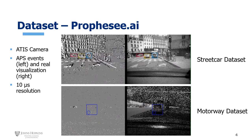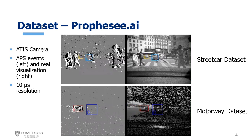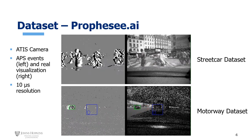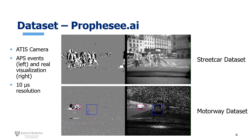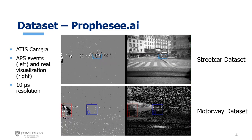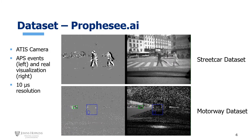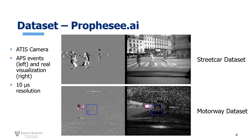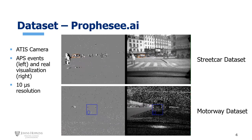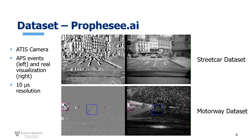The second dataset is labeled as Motorway. Same way the information was captured — an ATIS camera mounted on top of a car driving on a freeway. We liked this dataset a lot because it was way more homogenous. There were cars moving in one specific area of the screen. The data is very homogenous. So we figured testing our algorithm on these two datasets would help us span the spectrum of robustness for any model to see its validity.